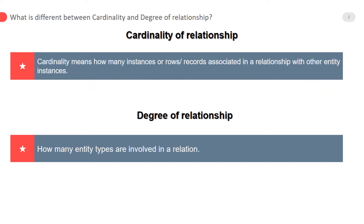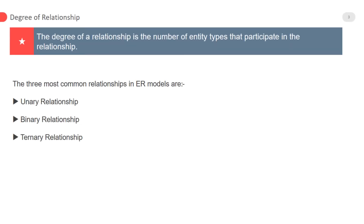An entity is also known as a table in any database management system. So the degree of a relationship is the number of entity types — or tables — that participate in the relationship. The three most common relationships in ER models are unary relationship, binary relationship, and ternary relationship.